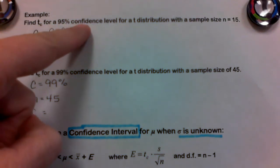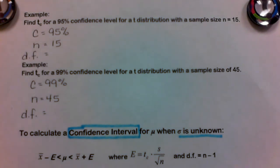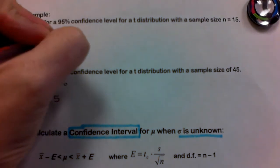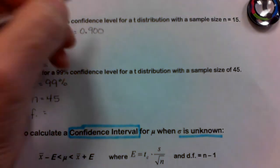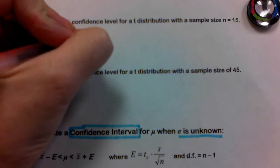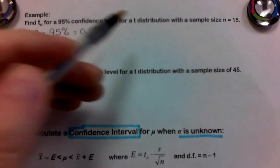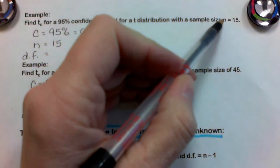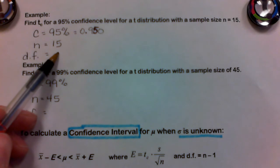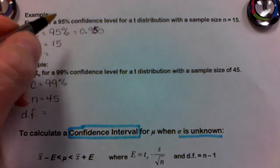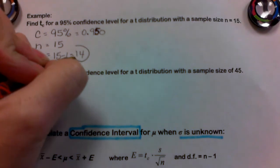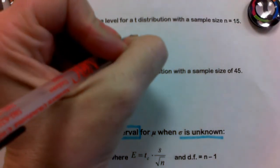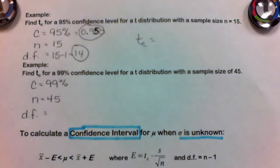For example, find T sub C for a 95% confidence level. On the Student's T distribution, that's written as a decimal: 0.950. For a T distribution with a sample size of N equals 15, N is not directly on the table — what we need is the DF, which is N minus 1, or 14. These are the two values we look for to find our T sub C value.